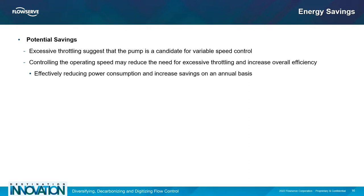A worthwhile alternative to excessive throttling is to implement a means to control pump running speed. Applied properly, variable speed control can promote energy savings and reduce carbon footprint. Moreover, by limiting the damage to equipment, speed control can also reduce maintenance costs and production costs associated with downtime.